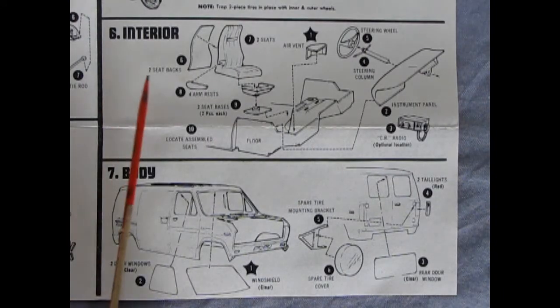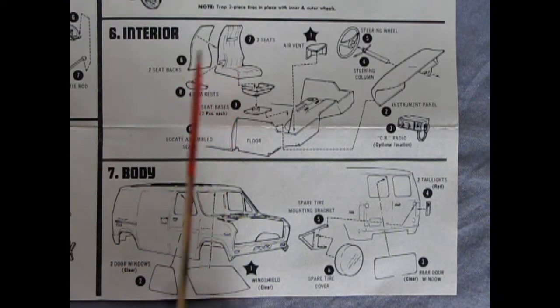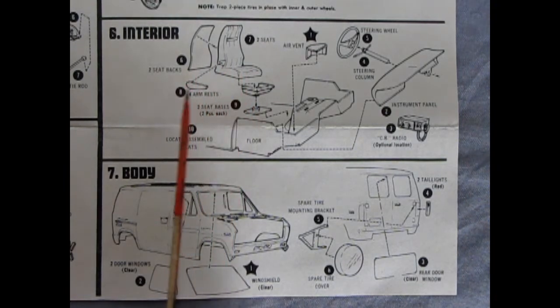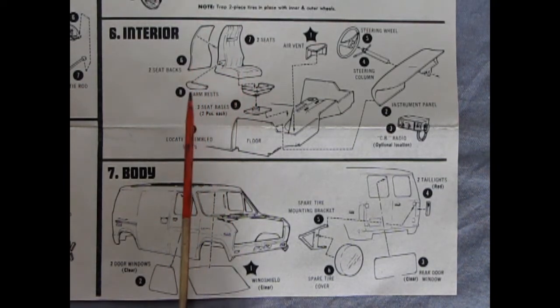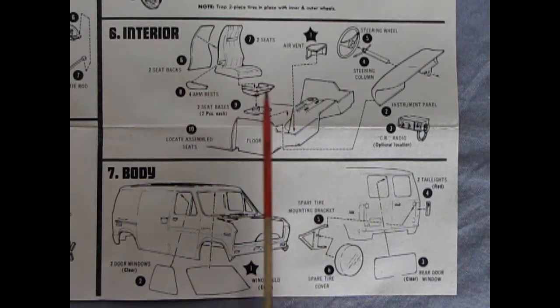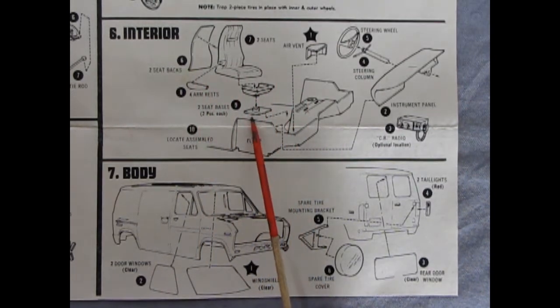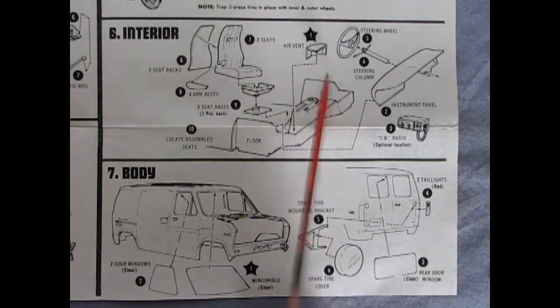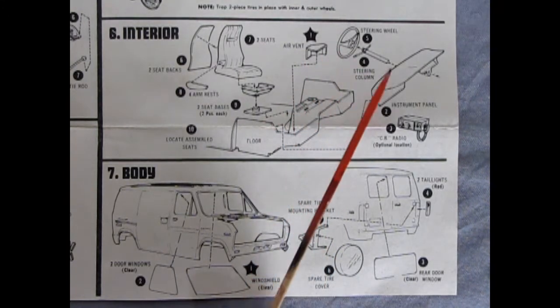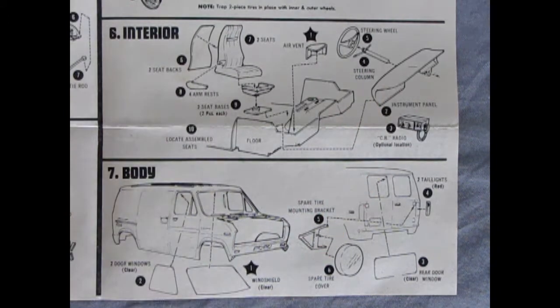Panel 6 shows our interior going together. There's those captain chairs and you can see how many pieces are needed to assemble them. You got your seat back, your seat front, four armrests for the two different chairs of course and then we have this base and the swivel mount down below. Here's an air vent which pops into place. Steering wheel, steering column, dashboard and our CB radio.